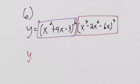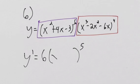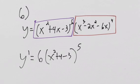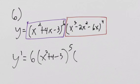So y prime equals - we'll do the derivative of the purple box first. The derivative of blah to the sixth is six blah to the fifth. Leave the inside alone: x squared plus four x minus three. Now we need to multiply by the derivative of the inside, which is two x plus four, because this is x squared plus four x.